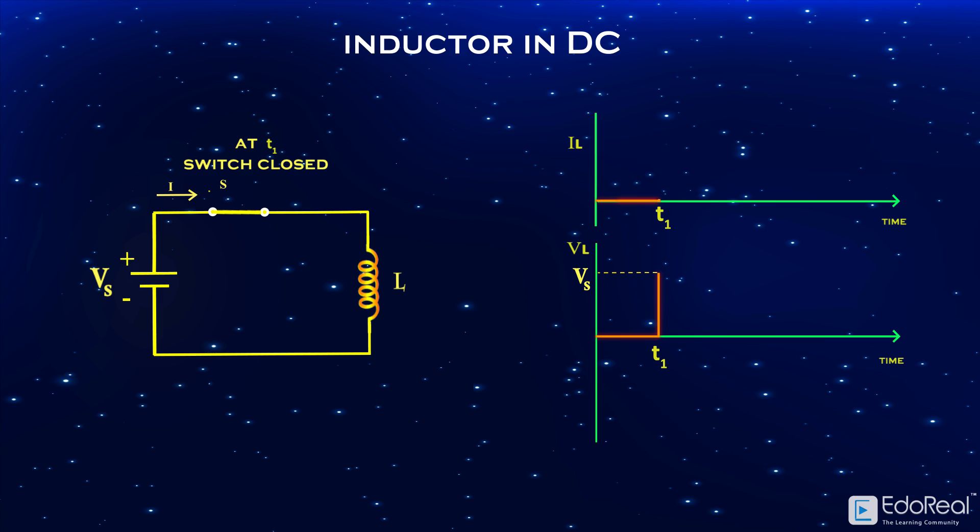Hence, it is clear that current has zero magnitude at t1. The flow of electrons through the inductor starts after time t1.